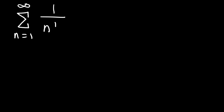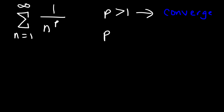In this video, we're going to talk about the p-series. So let's say if we have the series from 1 to infinity of 1 over n raised to the p. Now, if p is greater than 1, the series will converge. If p is less than or equal to 1, then the series will diverge.